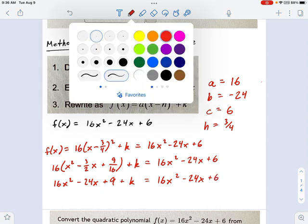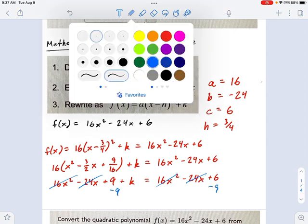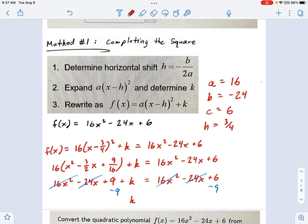So hopefully you're noticing there's a lot of things here that are going to cancel out. I've got a 16x squared on each side, I've got a negative 24x on each side, and all I get left is this little equation: 9 plus k equals 6. Well, you can subtract 9 from each side. We're going to do a little minus 9, minus 9 action here, and what do we get? We get k equals negative 3.